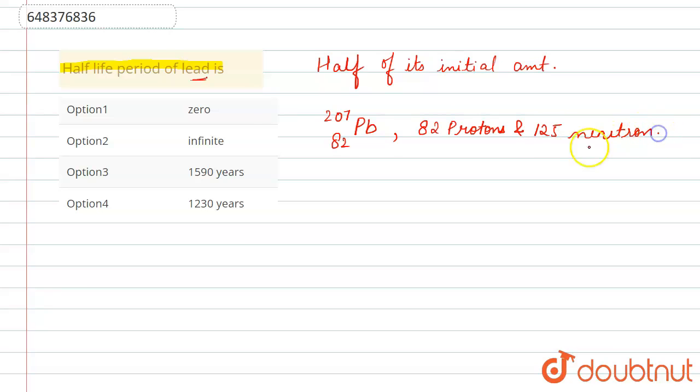Alright, so here if you see that neutron to proton ratio, this is greater than one. Hence we can say that this atom of lead is stable. Alright, now since the atom of lead is stable, then